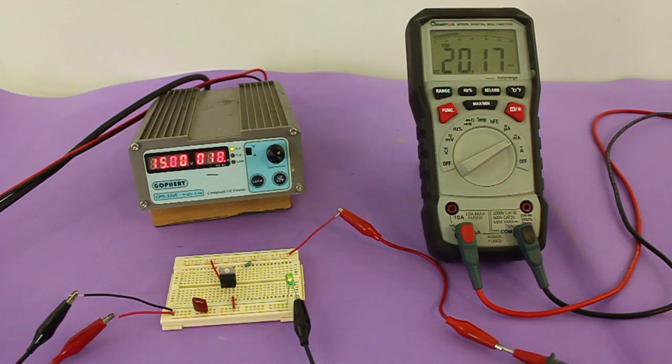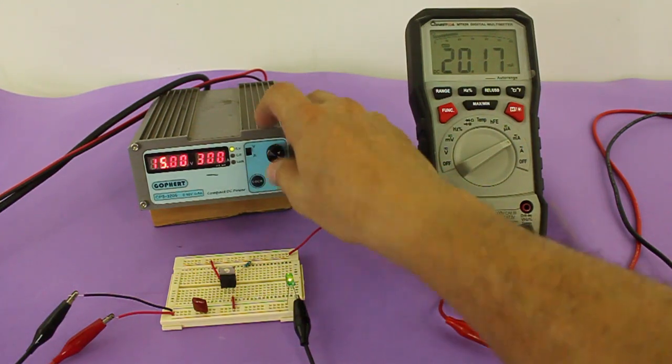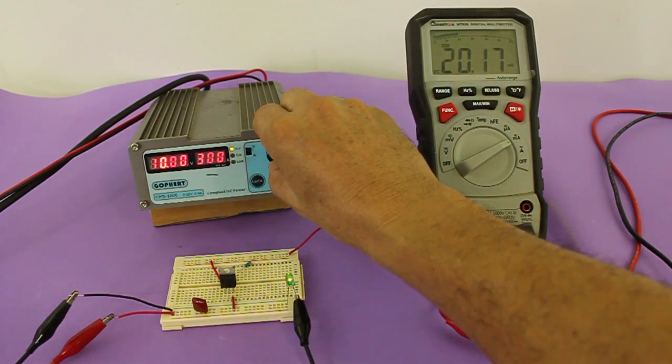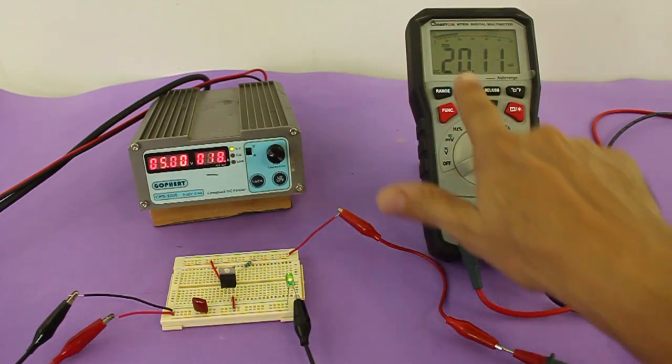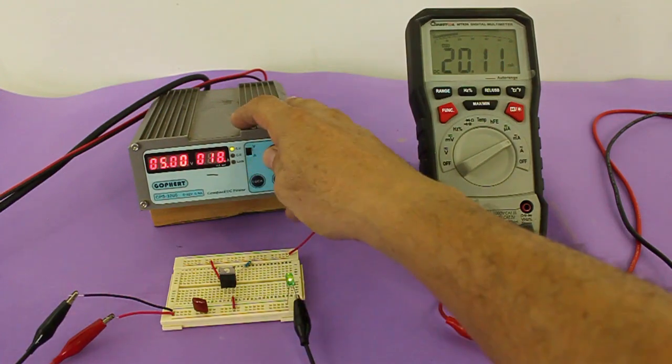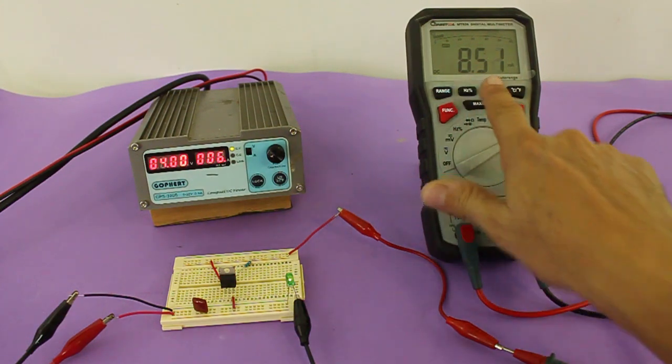We said that there is a minimum voltage for the circuit to work. Let's see. I am going to lower the voltage to 5 volts. We still have 20 milliamps, but if we use 4 volts, then the input voltage is not enough to give the required current.